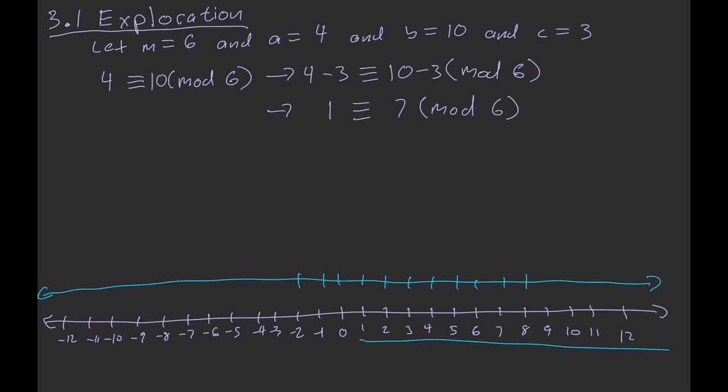The new number line would look something like this where 4 modulo 6 has a remainder of 4, and then 10 modulo 6 also has a remainder of 4. And if we take 4 minus 3, well of course we get 1. And you will see that 1 modulo 6 is of course 1, but then 10 minus 3 gives us 7, which also is 1 modulo 6. So either way you look at it.